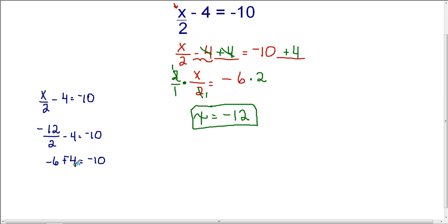So negative 6 plus negative 4 is negative 10. And I end up with negative 10 equals negative 10. Since this is a true statement, that means that my answer of negative 12 is correct.